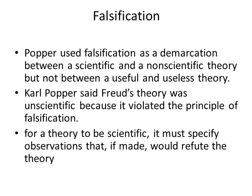The way Karl Popper sees it, falsification is a line in the sand — it is a demarcation between a scientific and a non-scientific theory. He emphasizes it's not between a useful and useless theory, so something can be non-scientific and still have some usefulness to it. According to Karl Popper, Freud's theory was unscientific because it violated the principle of falsification. For a theory to be scientific it must specify observations that, if made, would refute the theory — it needs to have the ability to be proven wrong.